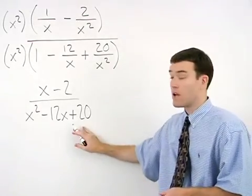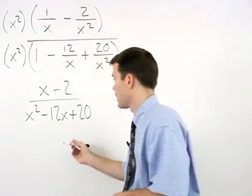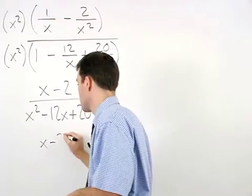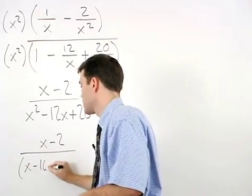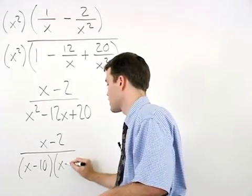Notice that our denominator factors, so we have x minus 2 over x minus 10 times x minus 2.